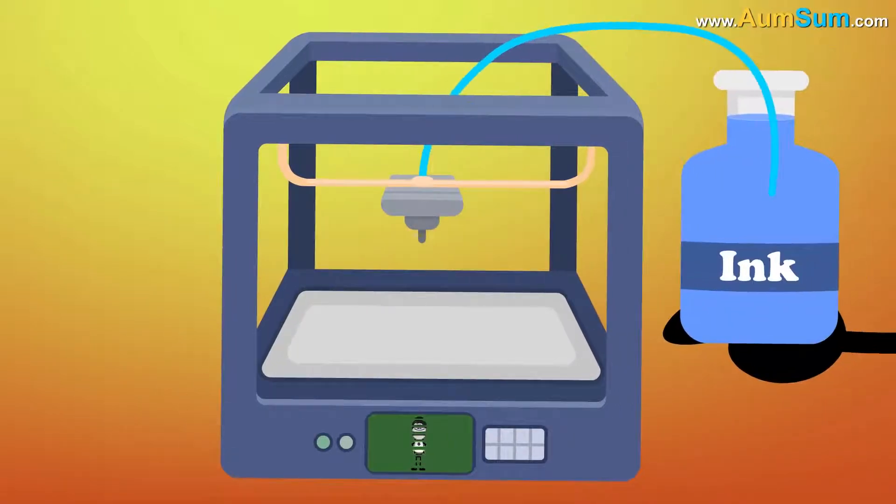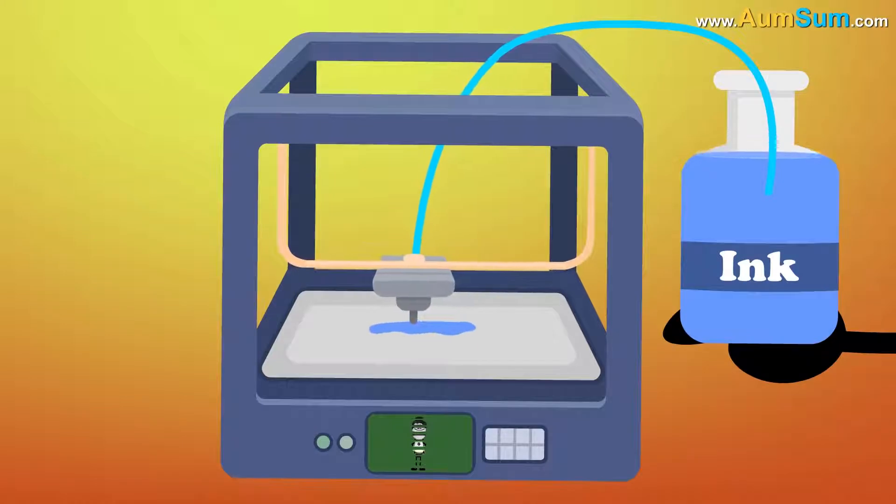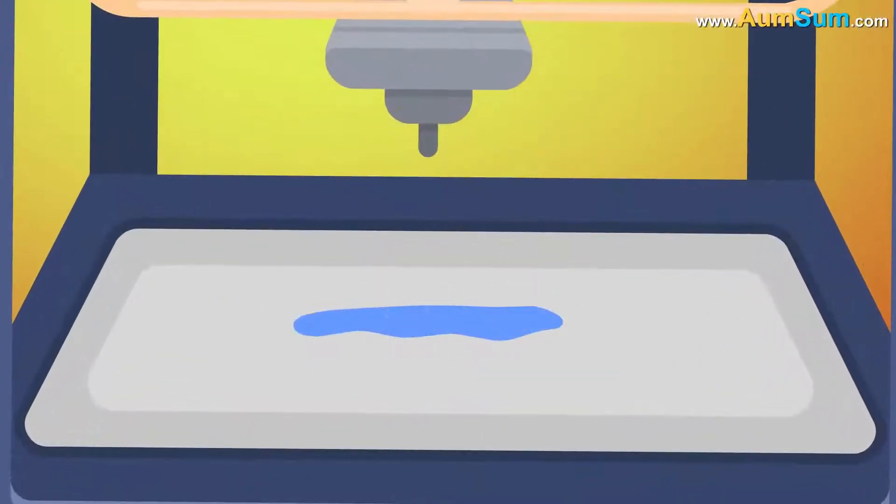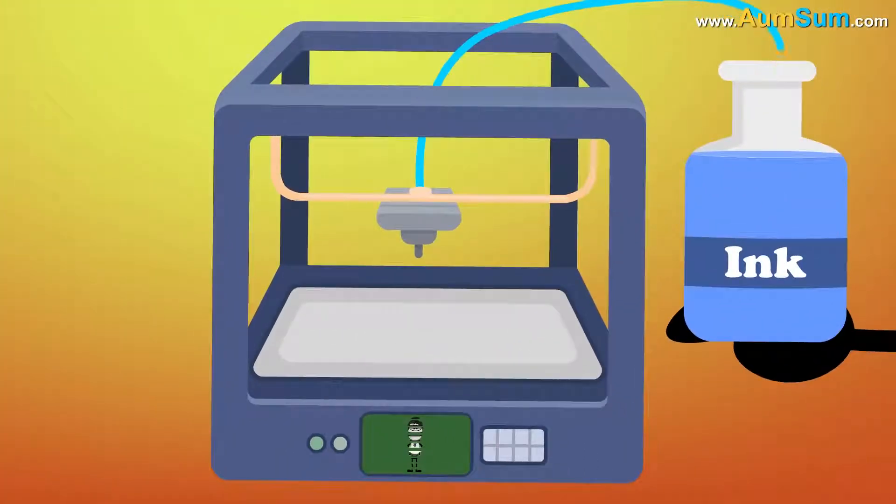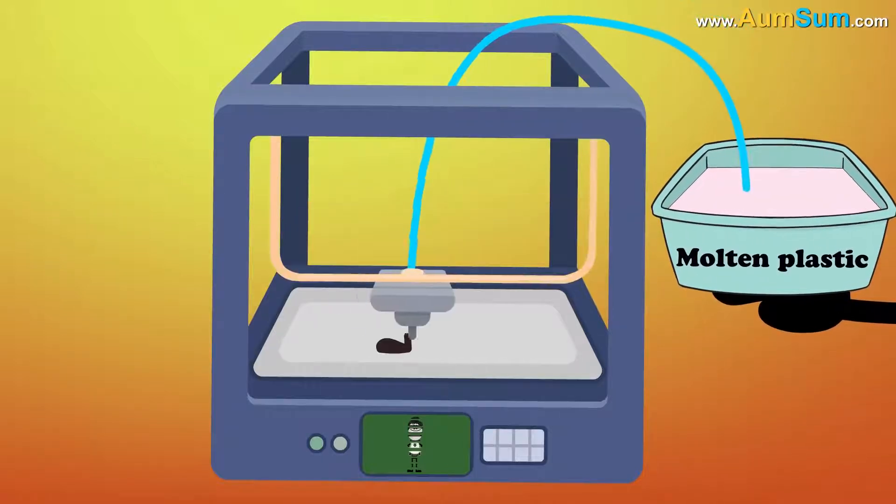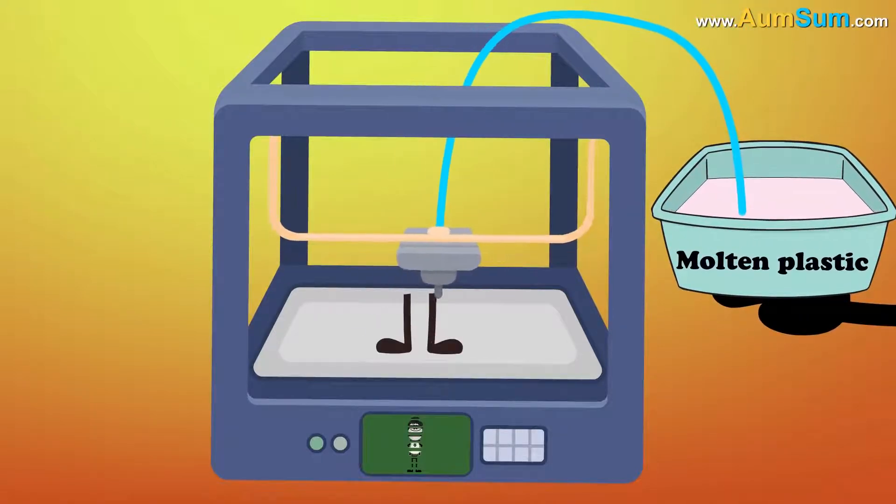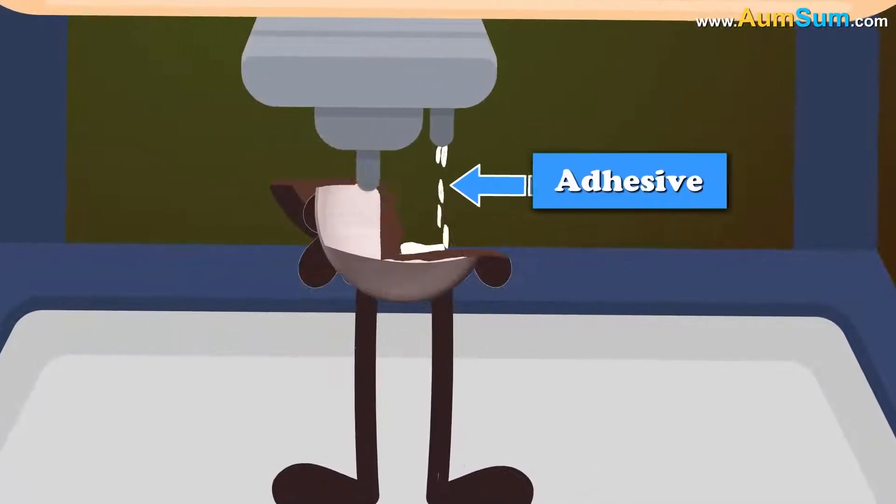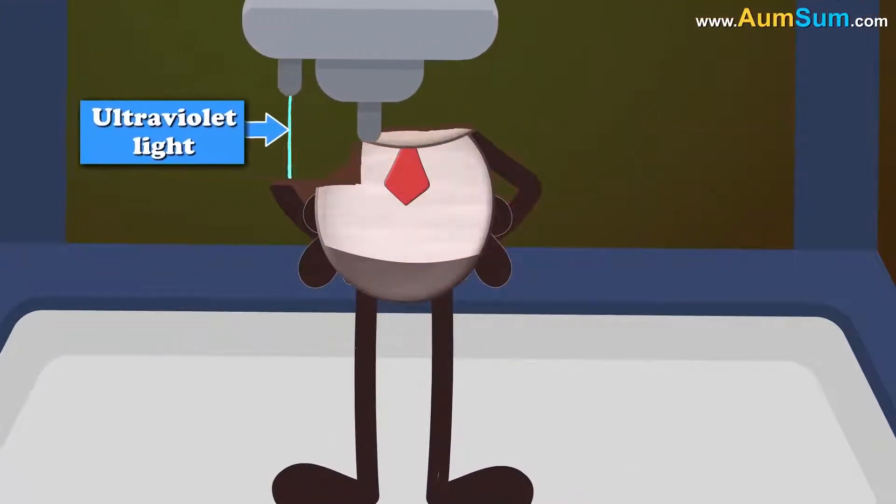Now, if we were to use ink to print them, it would not be possible to get the volume necessary to build a 3D model. Hence, instead of ink, the 3D printer may use molten plastic. The molten plastic is fused together using an adhesive or ultraviolet light.